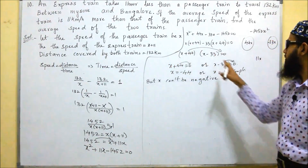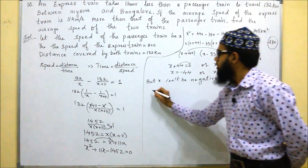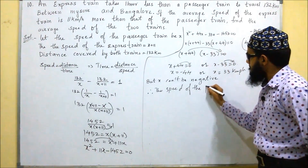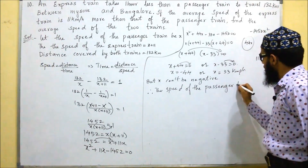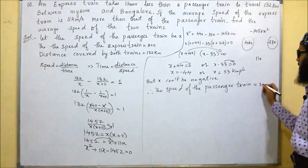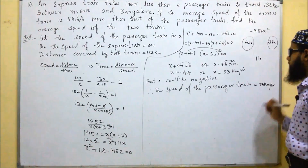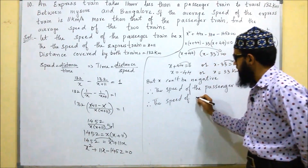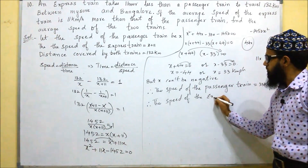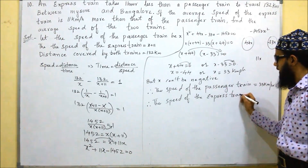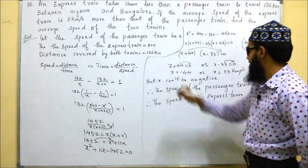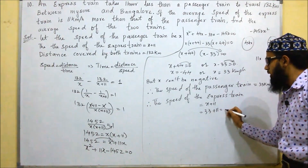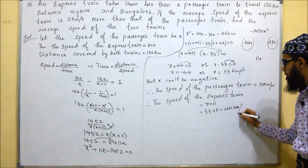Therefore, the speed of the passenger train is x, which is 33 km per hour. The speed of the express train is x plus 11, that is 33 plus 11, which equals 44 km per hour.